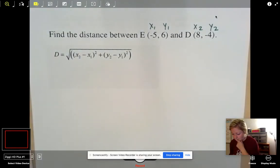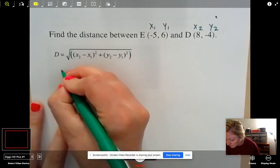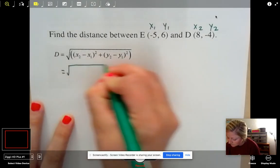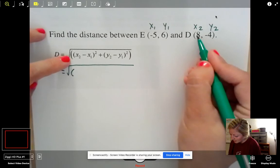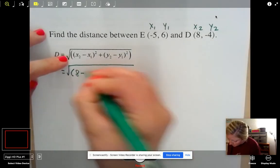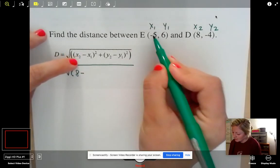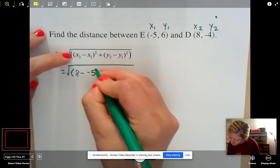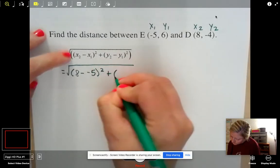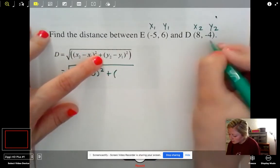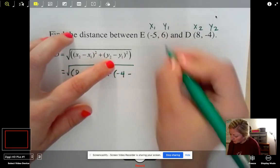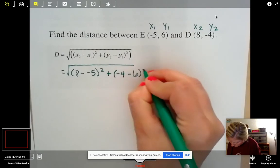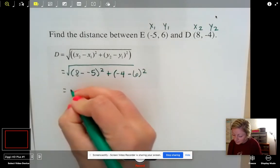I'm going to start. Again, we're just plugging in. Copy down your formula exactly how you see it. And then you plug in. So my X2, we labeled as 8. My X1, we labeled as negative 5. Y2, negative 4. Y1 is 6. Now we simplify.